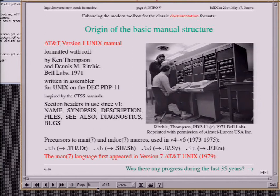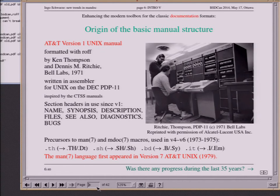Of course, we have to apply all that to manual pages. The first people who did that were Ritchie and Thompson for the first version of the research UNIX manuals in 1971. Some of the section headers they used for the very first UNIX manual are still in use today. During the history of research UNIX in the 70s it evolved — in version 4 the first high-level macros appeared that resemble what we have today. In version 7 AT&T UNIX, we had the full man language that some people, in particular Linux, are still using today.